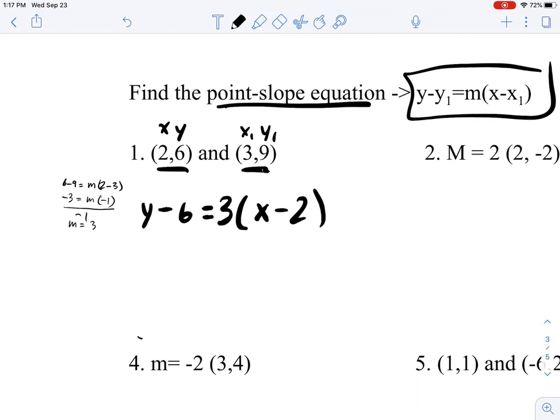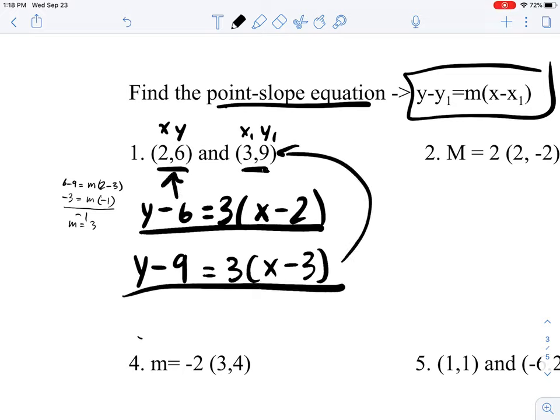Now this isn't the only point-slope equation that you can use. You can also create this one: y minus 9 equals 3 times x minus 3. This equation is the point-slope equation for this point. This equation is the point-slope for this point.